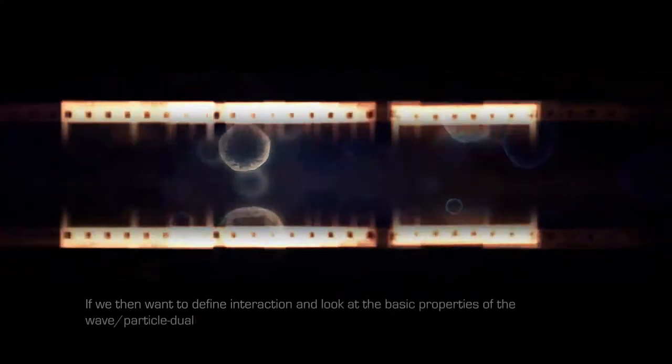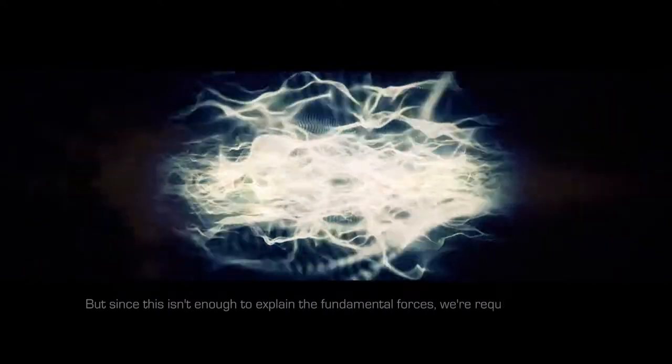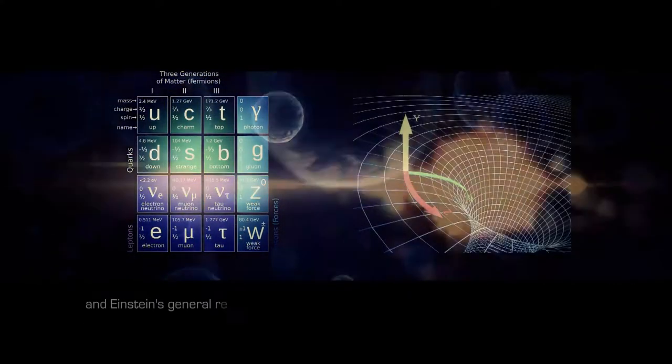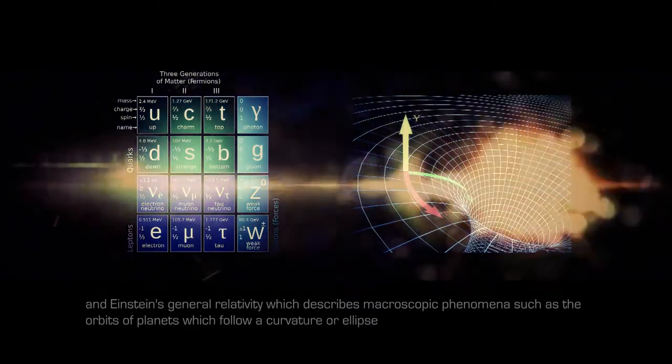If we then want to define interaction and look at the basic properties of the wave-particle duality of quanta, all interactions would consist of interference and resonance. But since this isn't enough to explain the fundamental forces, we are required to use different models. This includes the standard model, which mediates the dynamics of the known subatomic particles through force carriers, and Einstein's general relativity, which describes macroscopic phenomena such as the orbits of planets, which follow a curvature or ellipse in space and a helix in spacetime. But Einstein's model of spacetime doesn't hold up on quantum levels, and the standard model needs additional force carriers to explain the origin of mass. Without success, a unification of both models or theory of everything has been subject of much research.